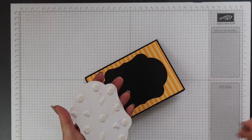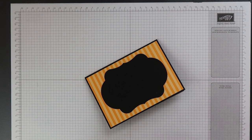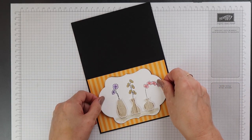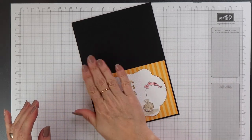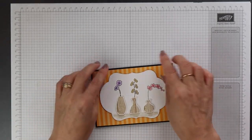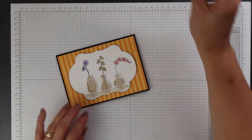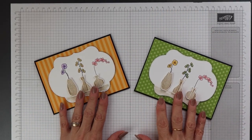Then all I need to do is remove the backings from the dimensionals on my image panel and position that on the front of the card. And that's my card complete. And here is the original one.